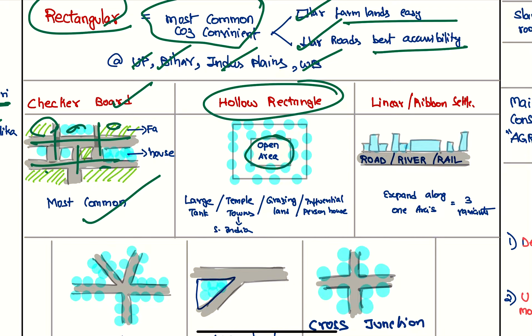This is the most common one. Next we have the hollow rectangle. The center area is open—it is generally a large tank in temple towns of south India, or a grazing land or influential house of an influential person, and settlements are seen around it.